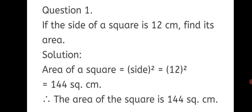Question 1: If the side of a square is 12 centimeters, find its area. We have the side of the square, so let's look at the solution. Area of square formula is equal to side squared. Substitute the side: side is 12, so 12 squared means 12 into 12, which equals 144 square centimeters. Therefore, the area of the square is 144 square centimeters.